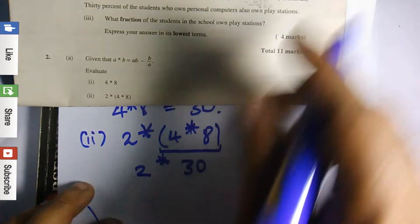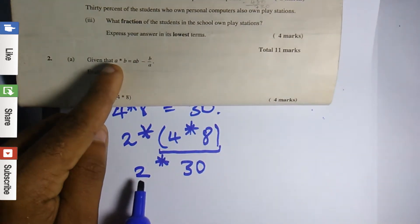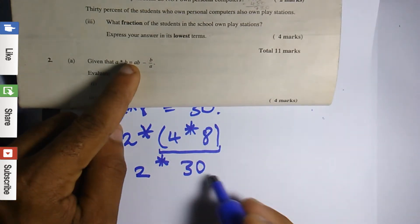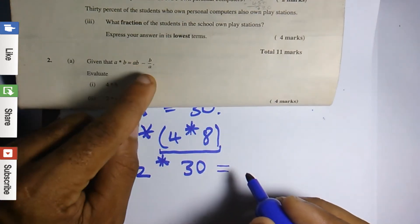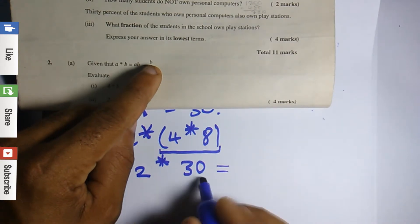Now same system that they gave us to work with, we're going to work with it. It's just that in this case, a has a new value of 2 and b has a new value of 30. So 2 star 30 is equal to - remember a star b is equal to ab - so in this case it's 2 times 30.